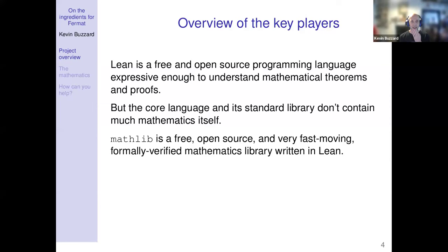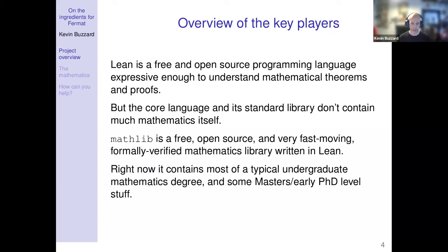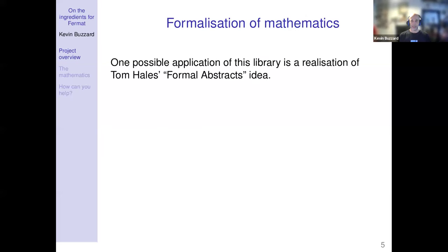Mathlib is a free and open source library of formally verified mathematics written in Lean. Mathlib got going in about 2017, nearly seven years ago. Hundreds of contributors have been slowly building it — the initial goal was to get an undergraduate degree's worth of mathematics in there. In some areas we're still doing that, for example we don't have much about Riemann surfaces, but in other areas we've gone much further, including a working theory of infinity categories and a lot of homological algebra.